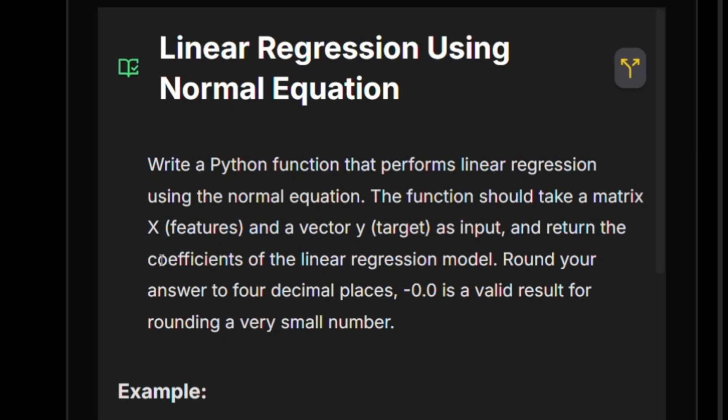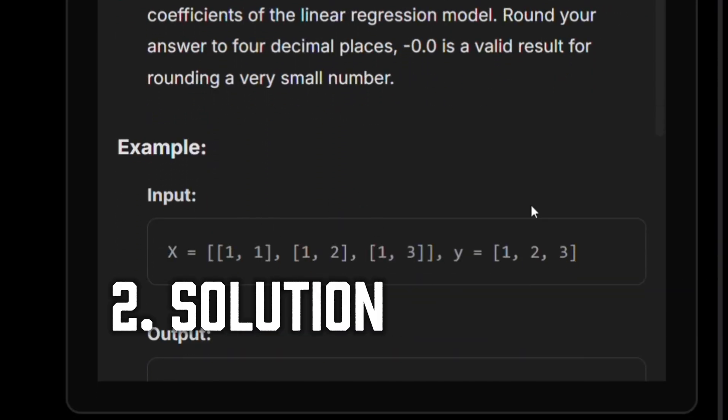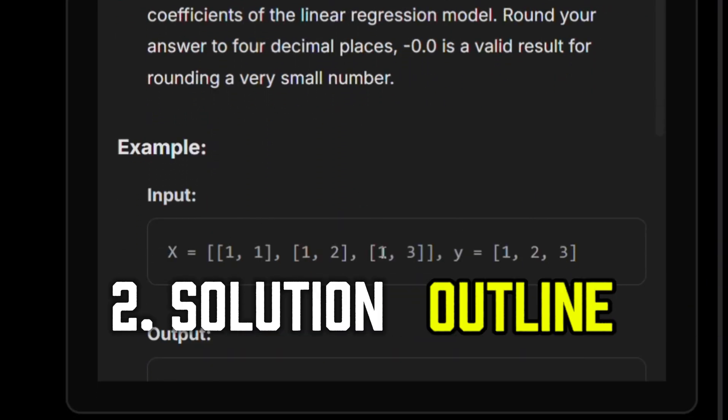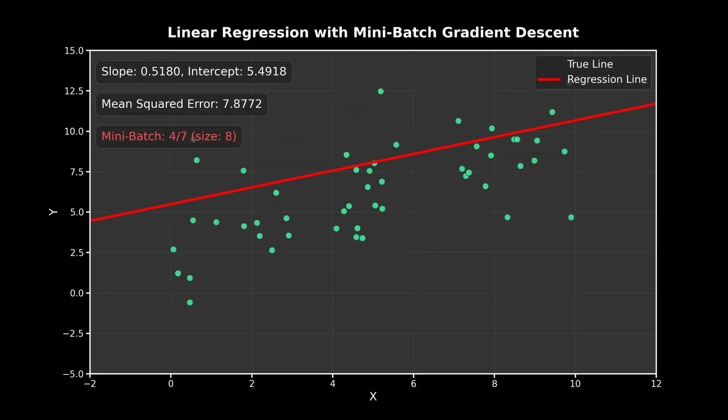And what we need to do is return the coefficients of a linear regression model. We need to round our answer down to four decimal places. So -0.0 is a valid result for small numbers. Over here, we're actually given a 2D problem. It's actually 1D. I'll explain that in a sec. But we could theoretically do this in any number of dimensions. So our solution is going to be very general.